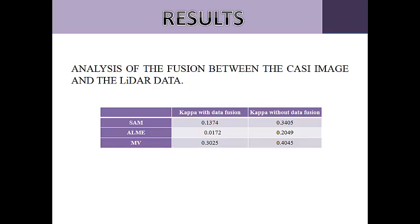It then proceeded to make the same classifications but without using height masks. These classifications were made with the same training and validation areas for comparison with the classifications obtained by data fusion. We observed a 40.35% improvement in applying the Spectral Angle Mapper using data fusion. For Linear Spectral Unmixing, there was about 80% improvement. And the Maximum Likelihood algorithm improved by 74.78% by adding LiDAR data in the classification.